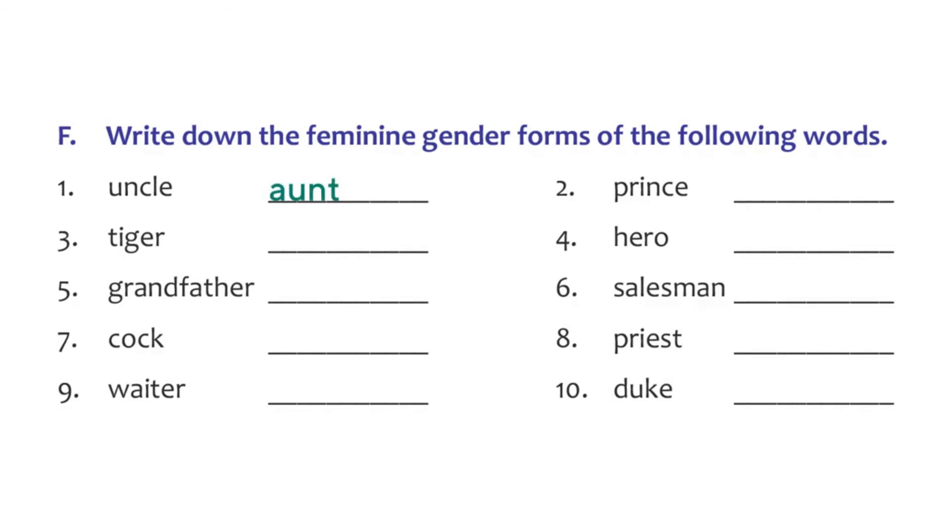Second one: prince. What is the feminine gender of prince? Princess. You add double S to the word and get the feminine gender. Third one is also similar: tiger. The feminine gender is tigress. Another example that I can think of is lion. What is the feminine gender? Lioness.